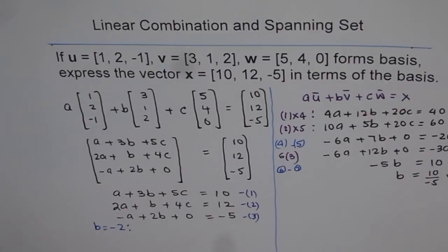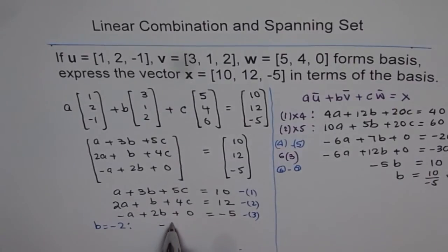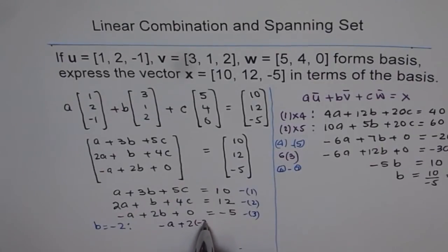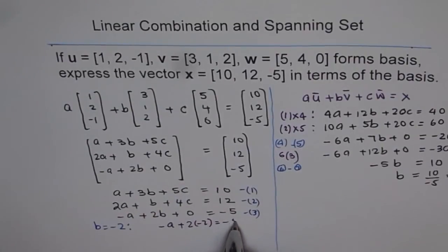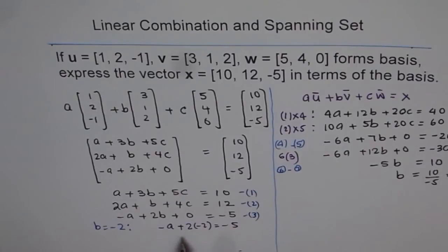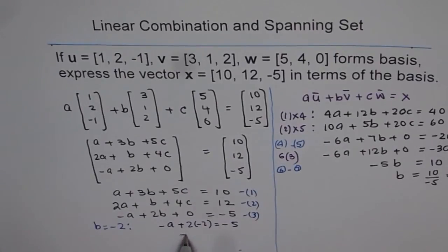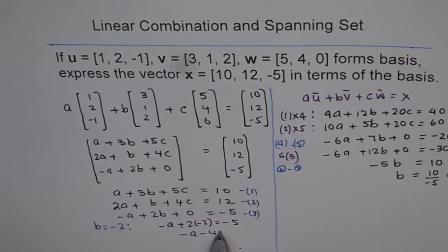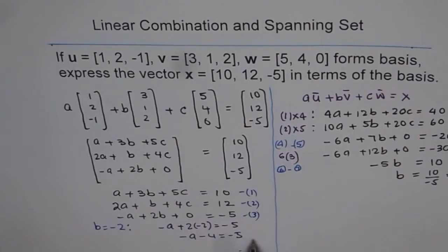So what do I get? I will get minus A plus 2 times minus 2 equals to minus 5, and minus A, and this is minus 4, equals to minus 5.